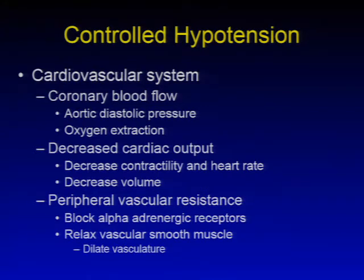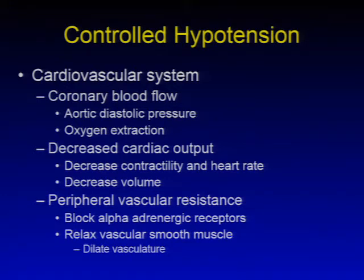Controlled hypotension in the cardiovascular system may involve the coronary blood flow. Of concern, the goal is to ensure adequate aortic diastolic pressure, as this is what affects coronary perfusion, and also to ensure oxygen extraction within the coronary blood flow system.